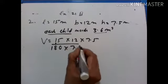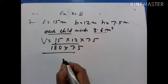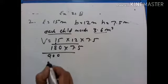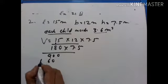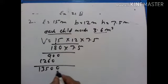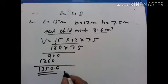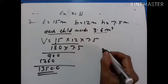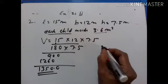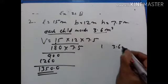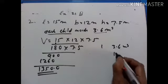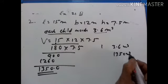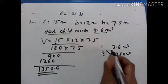180 into 7.5 is equal to 1350 meter cube — that is the volume of this room. If one child requires 3.6 meter cube, then in 1350 meter cube, how many children are accommodated?